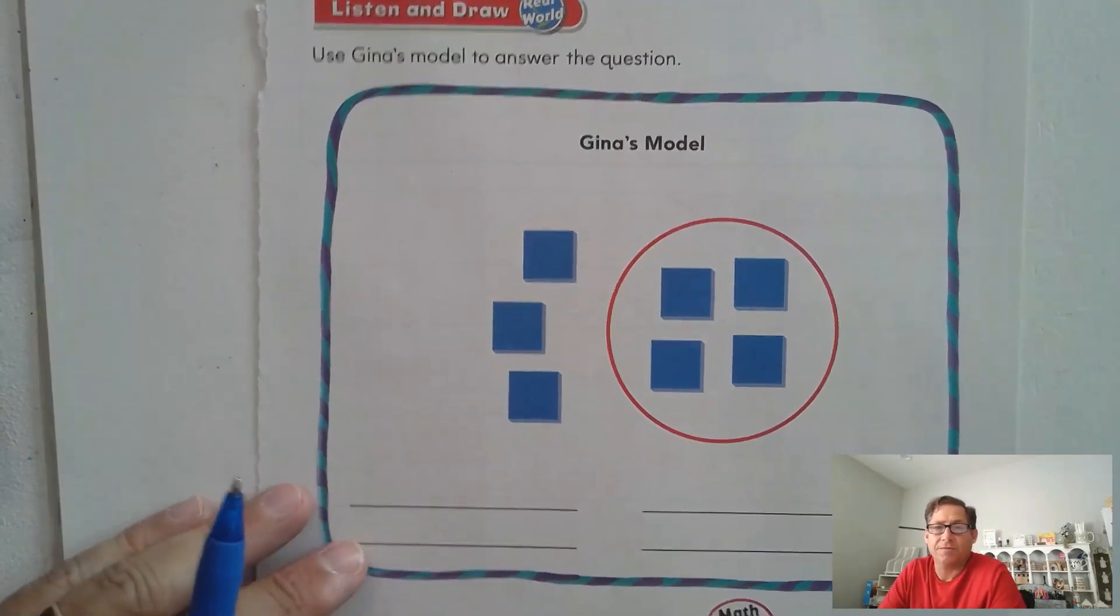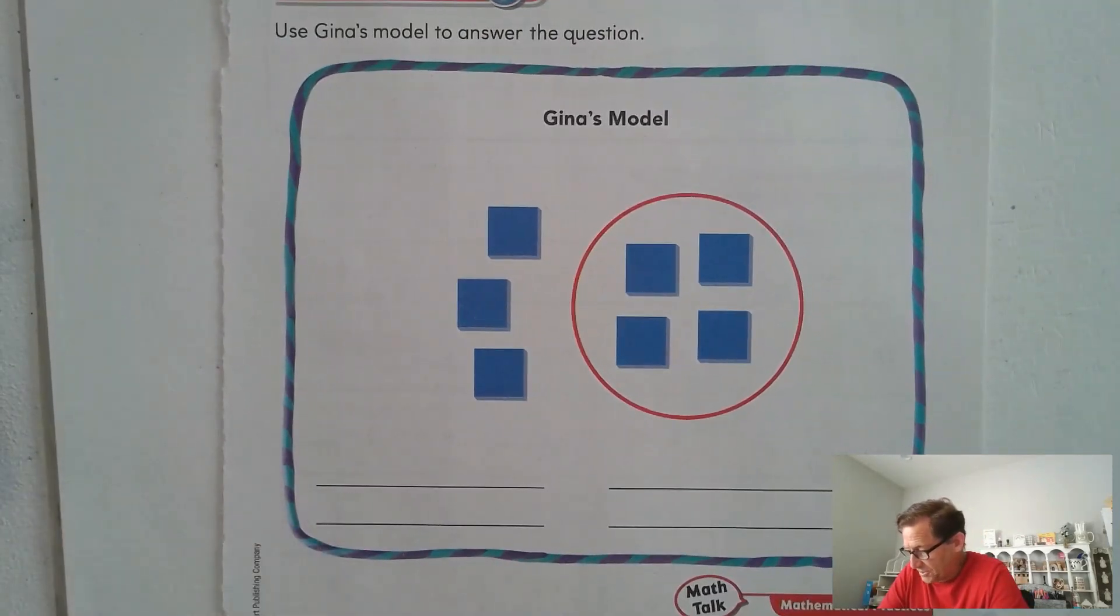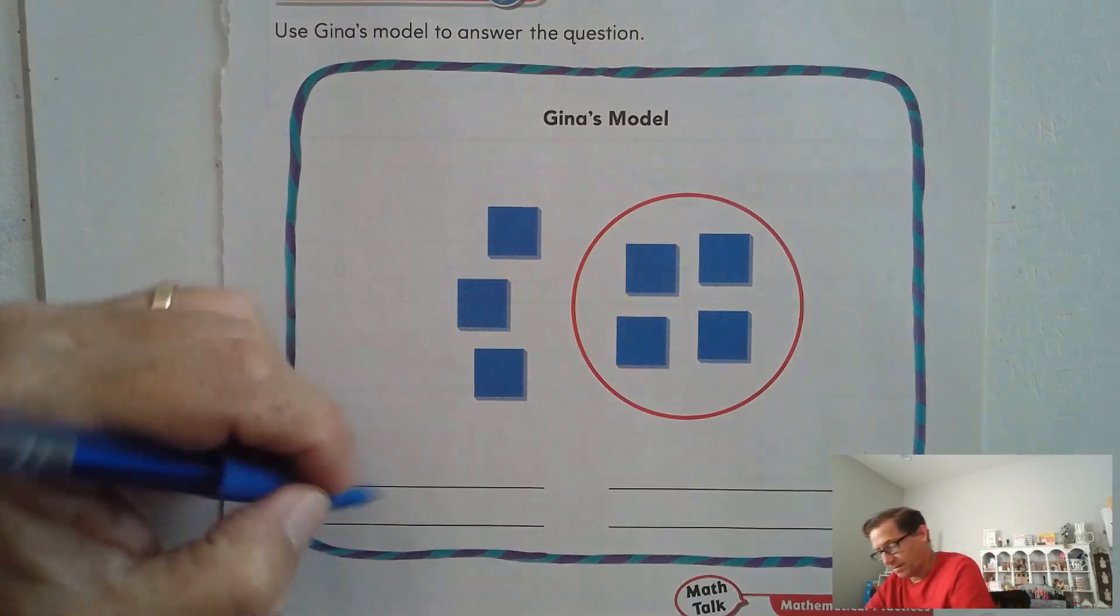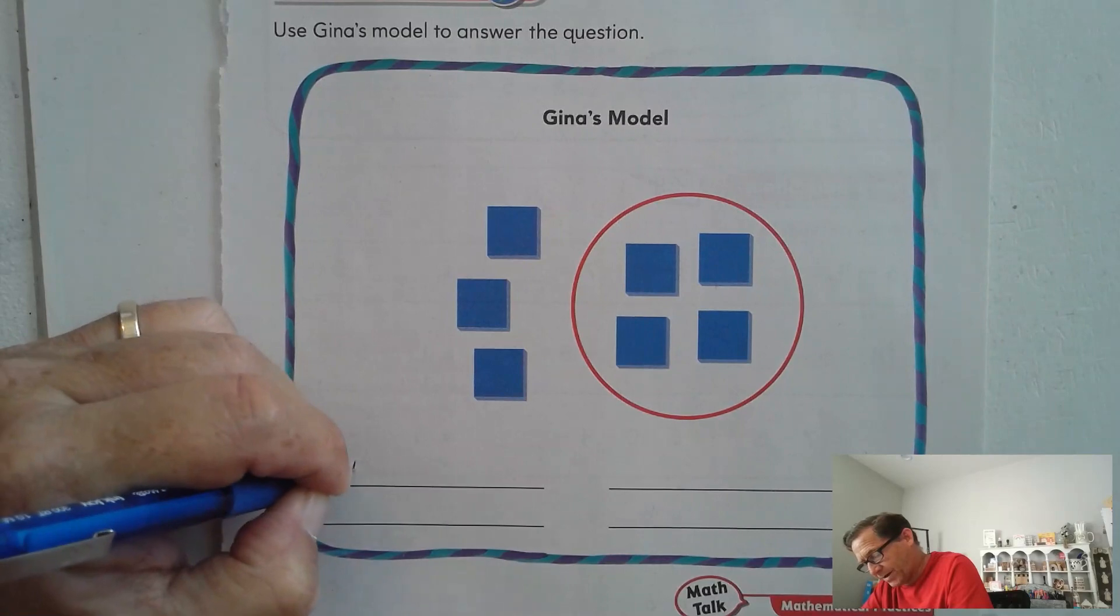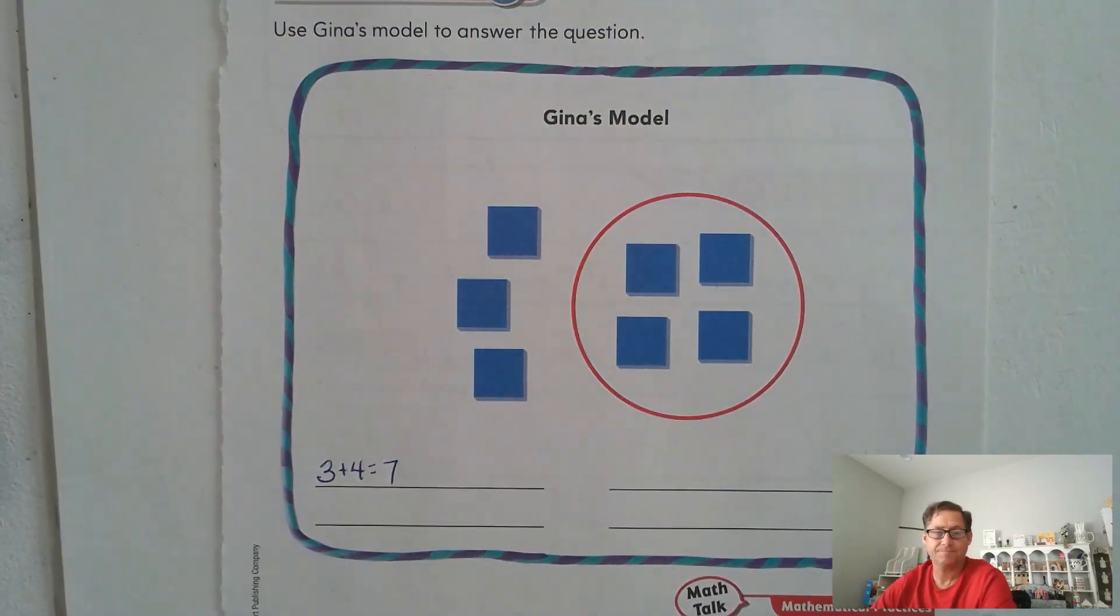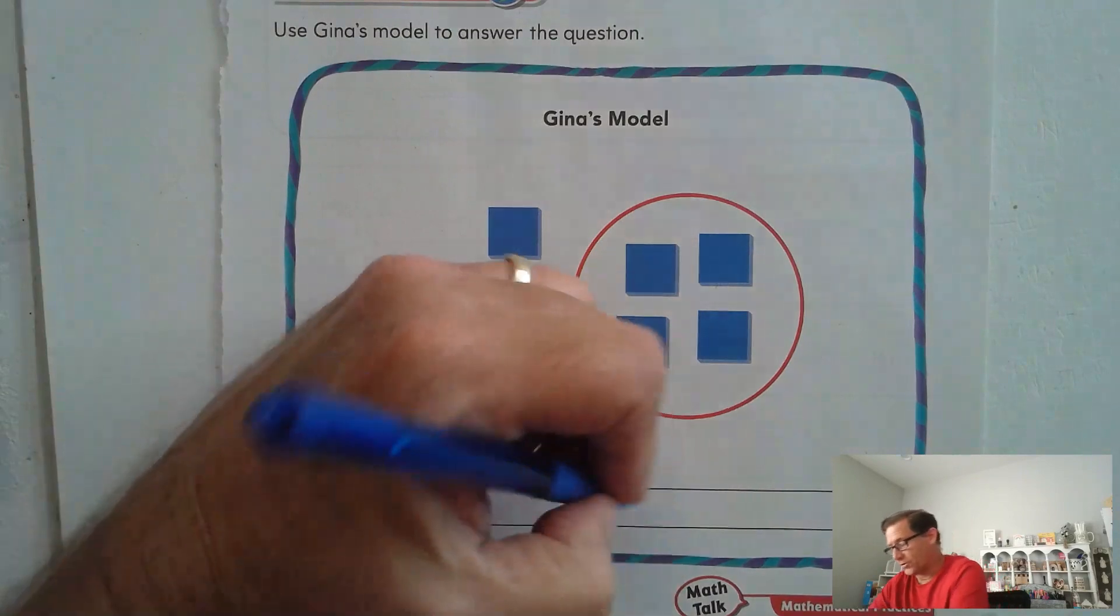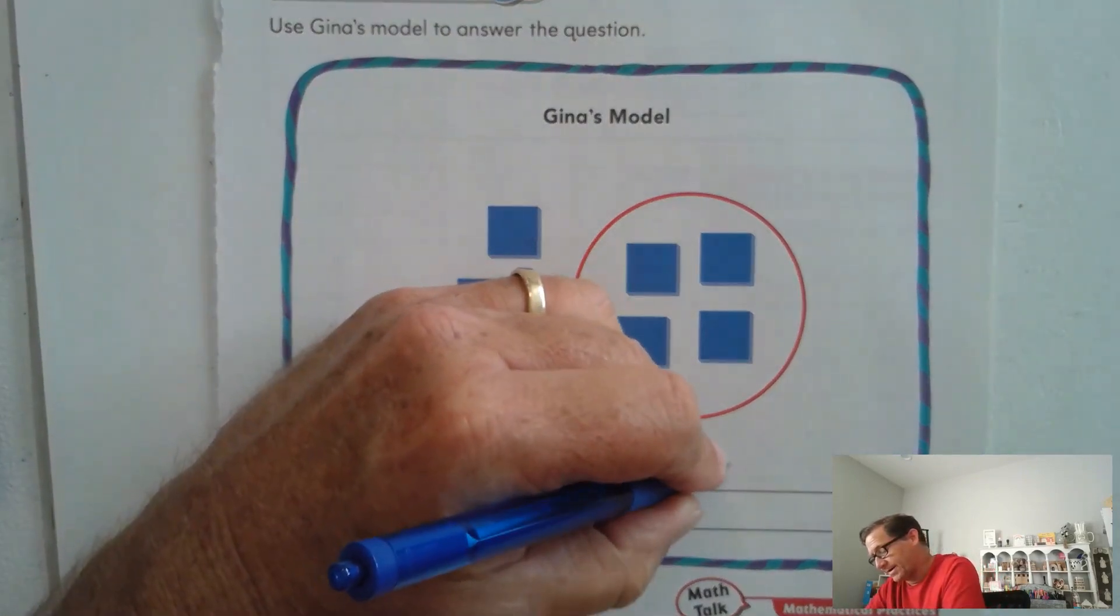Use Gina's model to answer the question. Listen to the situation I read. Gina put four color tiles inside the circle and she put three color tiles outside the circle. What addition fact could be written for Gina's model? Go ahead and you can pause the video and write your addition fact. So did you come up with something like this? 3 plus 4 equals 7, or you could have come up with 4 plus 3 equals 7.